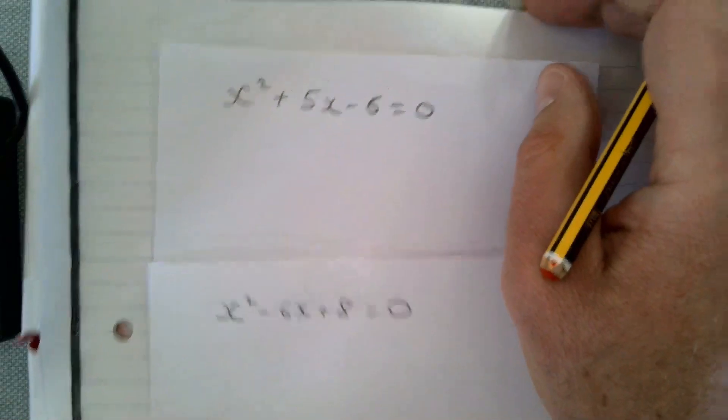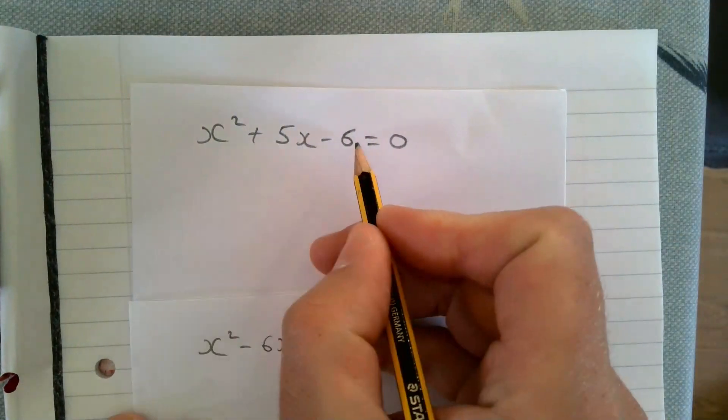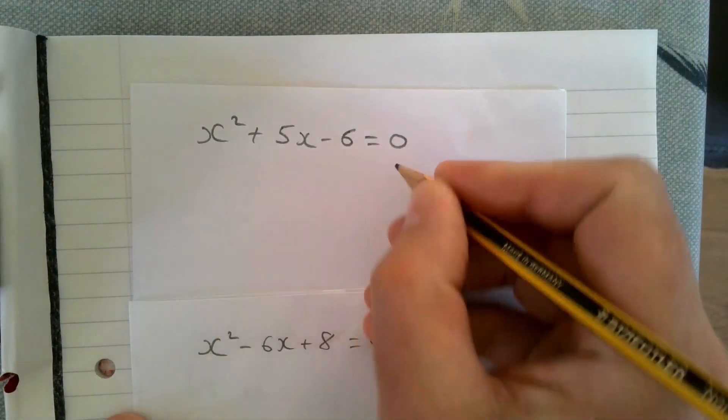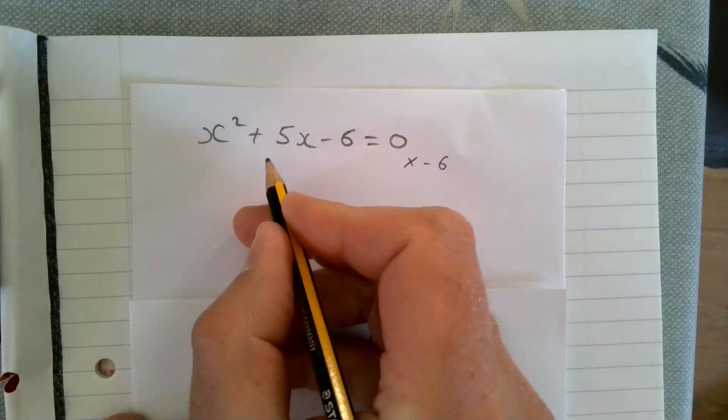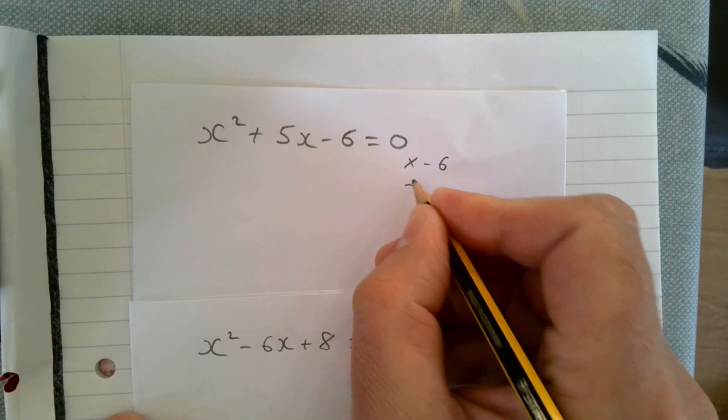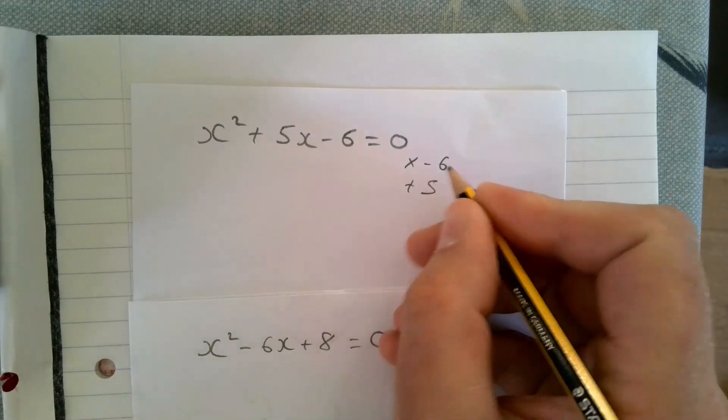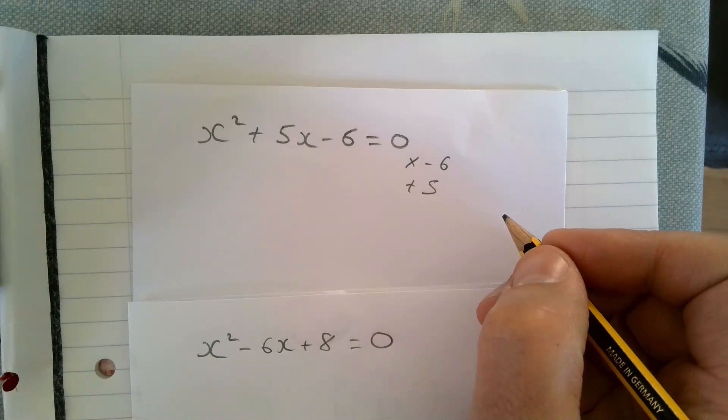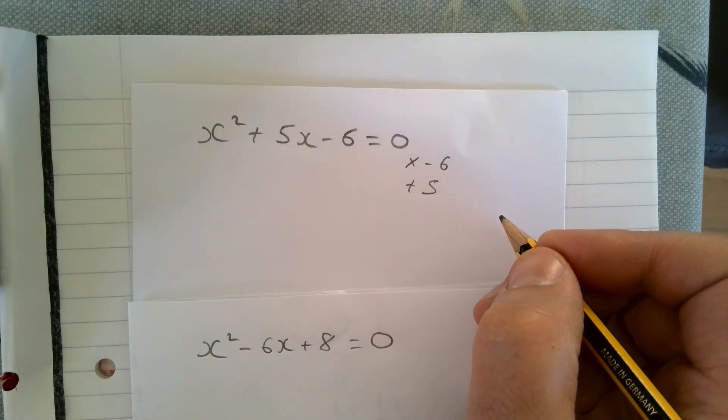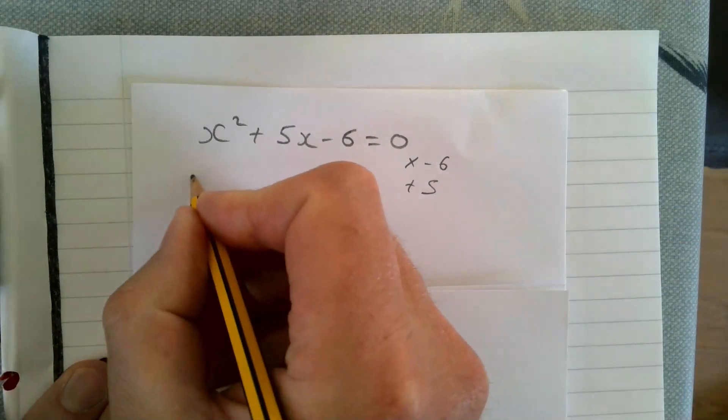Let's take a look. We're looking for two numbers that multiply together to get minus six and add together to get five. If you think about that, the answers are going to be six and minus one.